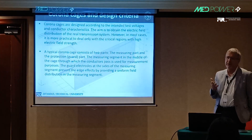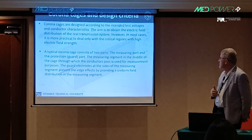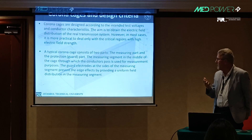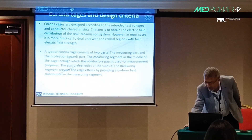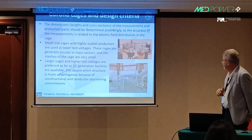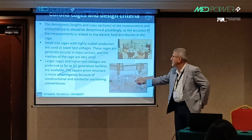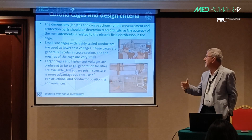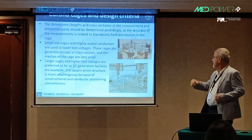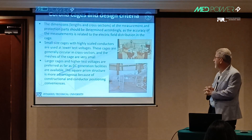A typical corona cage, if you have an idea, has basically two parts: the measuring part and the protection part. We wanted to design different dimensions in this study. The dimensions will be the radius of the circular ones or the side of the larger ones. That was what we designed at the laboratory and performed several tests with that corona cage, using conductor-scale conductor models.